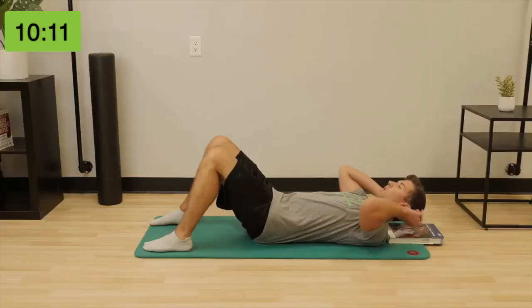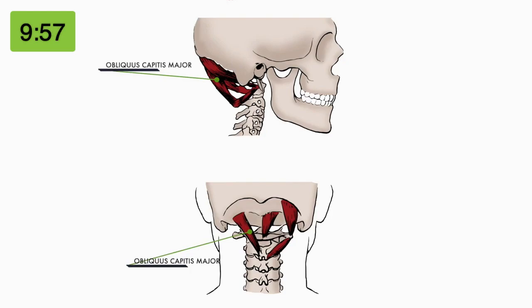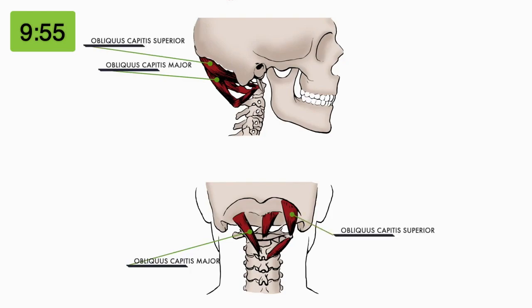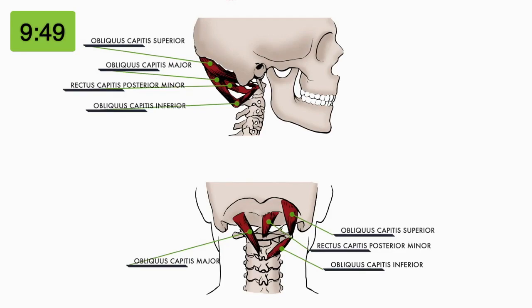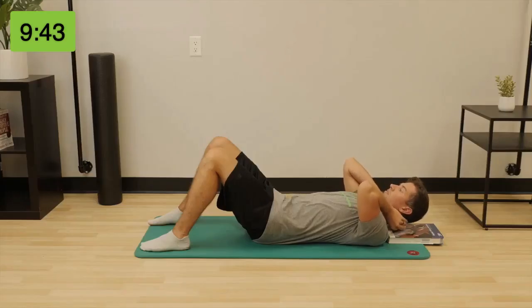Next we're going to work on the atlanto-axial junction and the rest of the cervicals. The first muscles to focus on at the atlanto-axial junction are the obliquus capitis major, obliquus capitis superior and inferior, and the rectus capitis posterior minor. Once we've worked through those, we will work on the rotatores and the semi-spinalis cervicis.